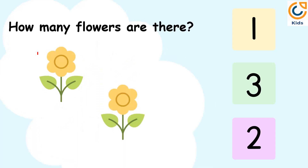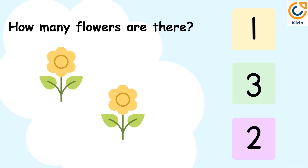How many flowers are there? Let's count the number of flowers. 1. 2. There are 2 flowers. So, the answer is 2.